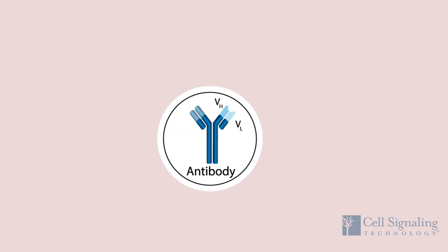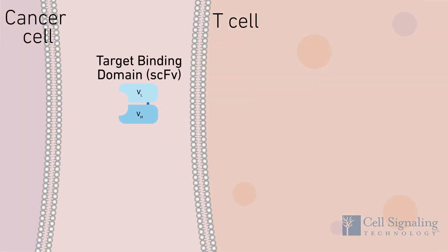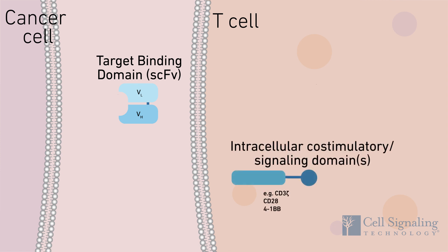First, the CAR extracellular domain is derived from a recombinant single-chain variable fragment, or scFv, of a monoclonal antibody that targets a tumor-specific antigen. This provides the first function: target recognition. The intracellular domain is derived from a co-stimulatory receptor or from other immune receptors, facilitating the second function: T cell activation.